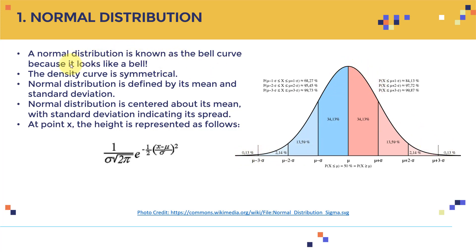It's called the bell curve because it looks like a bell, and the density curve is symmetrical — the right-hand side is symmetric to the left-hand side. The normal distribution is defined by its mean and by its standard deviation. In the center you will find the mean.